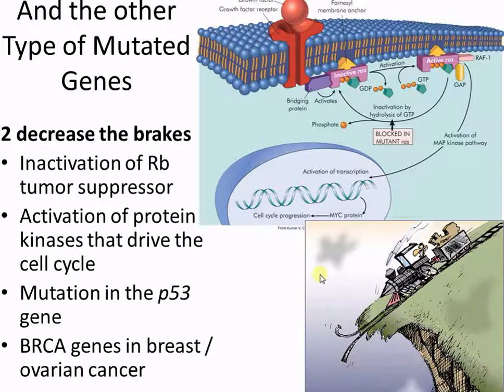Another important one is the P53 gene — this is actually both a repair and a brake gene. As you go through the cell cycle, you have checkpoints along the way. At each checkpoint you check whether everything replicated properly and whether anything is mutated. If there are flaws, P53 comes out and stops everything. If it can't fix the problem, it initiates apoptosis. People missing this brake reach checkpoints with flaws but have no brake, so they just keep replicating the flawed cell.